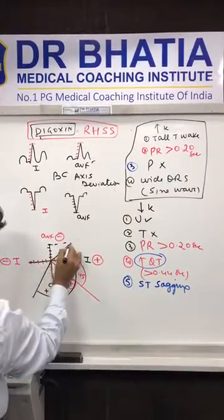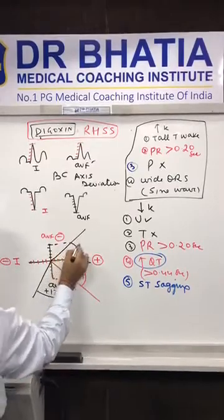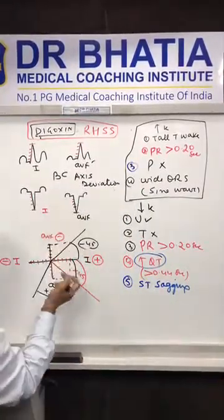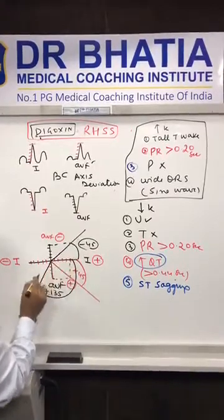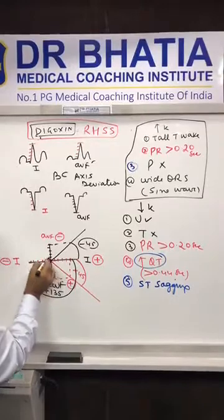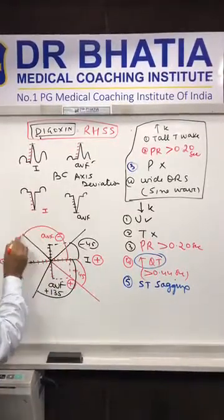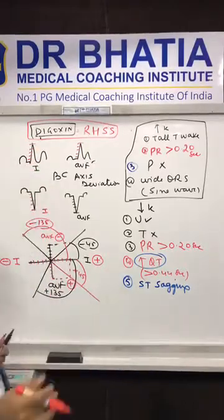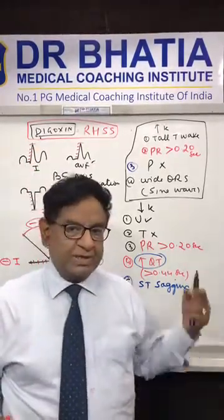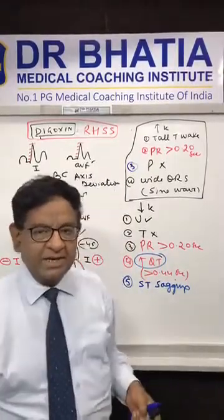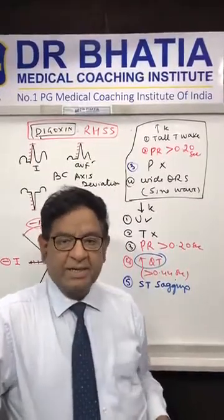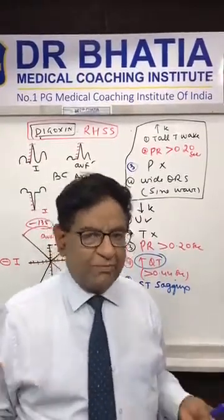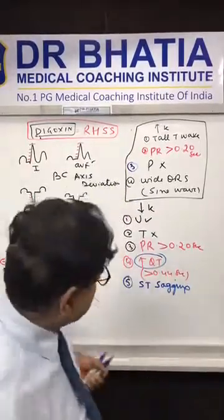If both L1 and aVF are negative, you get an angle of minus 135 degrees — that is extreme negative. I'm quite sure in the first instance you may not understand clearly; you can watch this video again after the lecture. But you don't need to remember all these calculations.